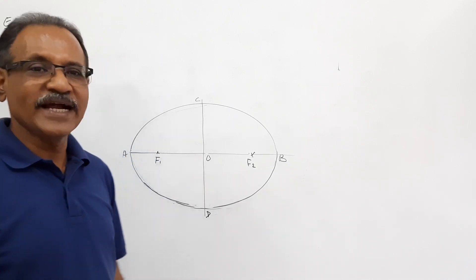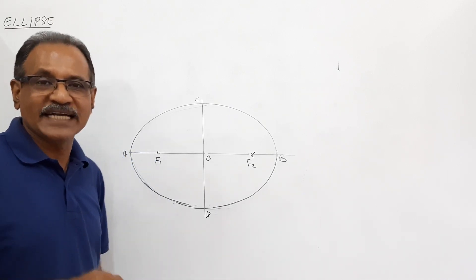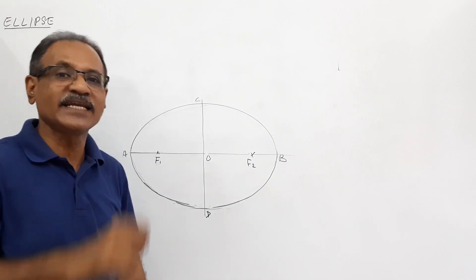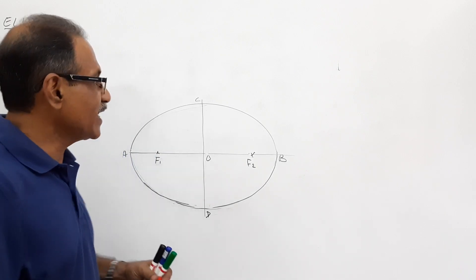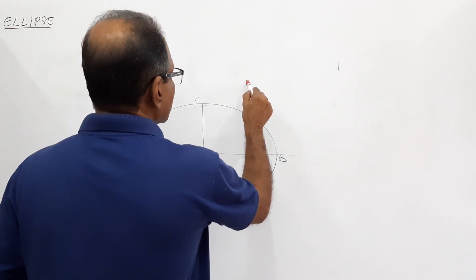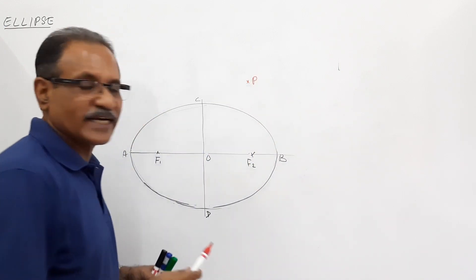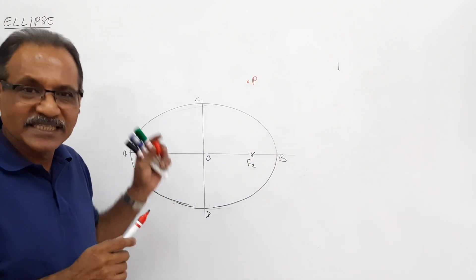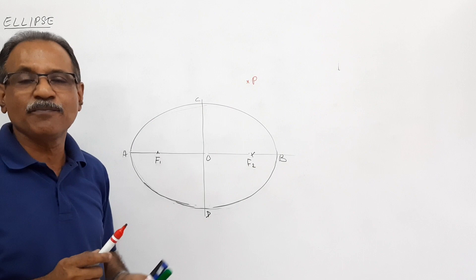Hi students, we are going to learn in this video how to draw tangent to an ellipse from a point that is lying outside the ellipse. Let us take a point P here, which is lying outside the ellipse. Our idea is to draw tangent to the ellipse from this particular point P.